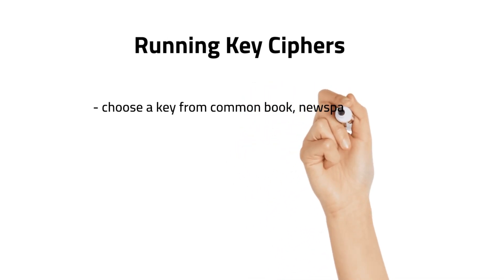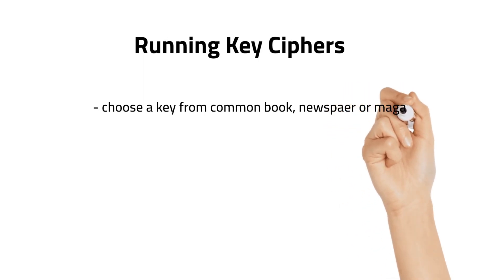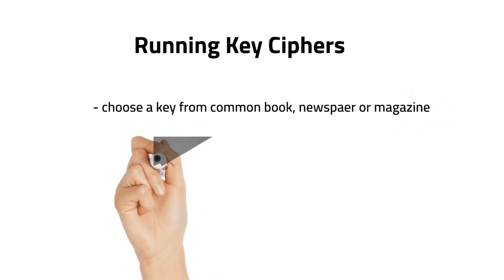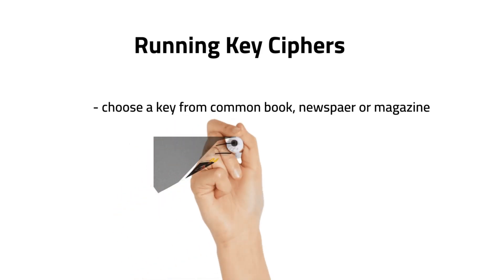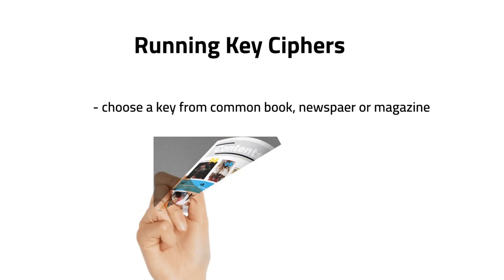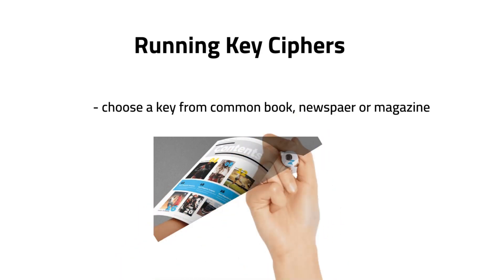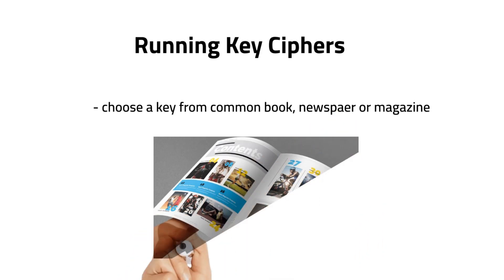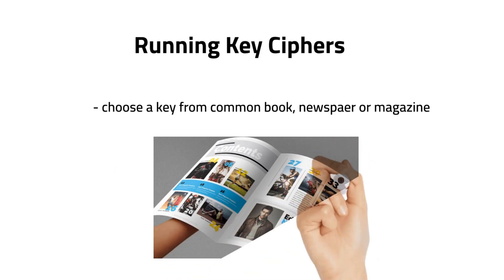We can overcome this with the running key cipher. This running key cipher works the same as one-time pad encryption — it also uses an encryption key length as long as the plain text message — but the key is often chosen from a common book, newspaper, or magazine.